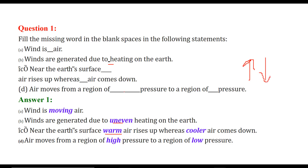Air moves from a region of high pressure to low pressure, because it is always a tendency in the entire world that everything wants to be in equilibrium. When high pressure exists at some point, it will try to adjust to low pressure so that it releases its pressure. That is how air in high pressure areas will always go to low pressure areas.